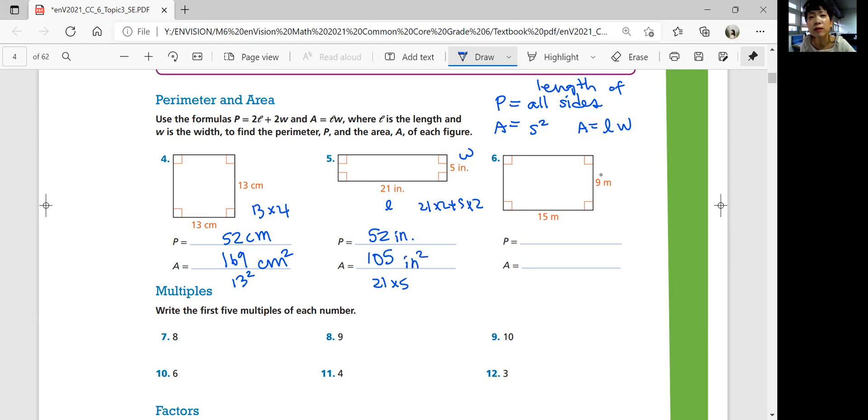Number 6. Perimeter: 15 plus 15 plus 9 plus 9, or 15 times 2 plus 9 times 2, equals 48 meters. Area: 15 times 9 equals 135 square meters.